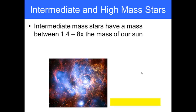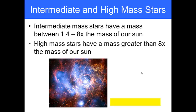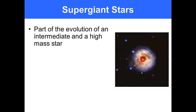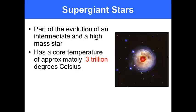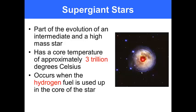Intermediate mass stars have a mass between 1.4 and 8 times the mass of our sun. High mass stars have a mass greater than 8 times the mass of our sun. Supergiant stars are part of the evolution of an intermediate and high mass star. It has a core temperature of approximately 3 trillion degrees Celsius. It occurs when hydrogen fuel is used up in the core of the star.